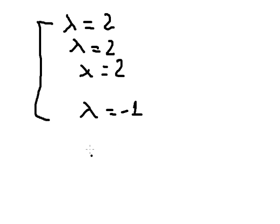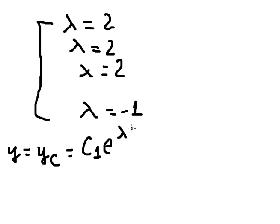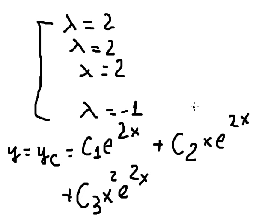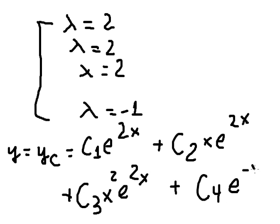Now we can write the final answer. y equals yc, which is c1 e to the power of 2x. Because the root lambda equals 2 repeats three times, for c2 we multiply by x times e to the power of 2x, and c3 is x squared times e to the power of 2x — each time increasing the power of x. The last term is c4 e to the power of negative x. This is the end. Thank you for watching.